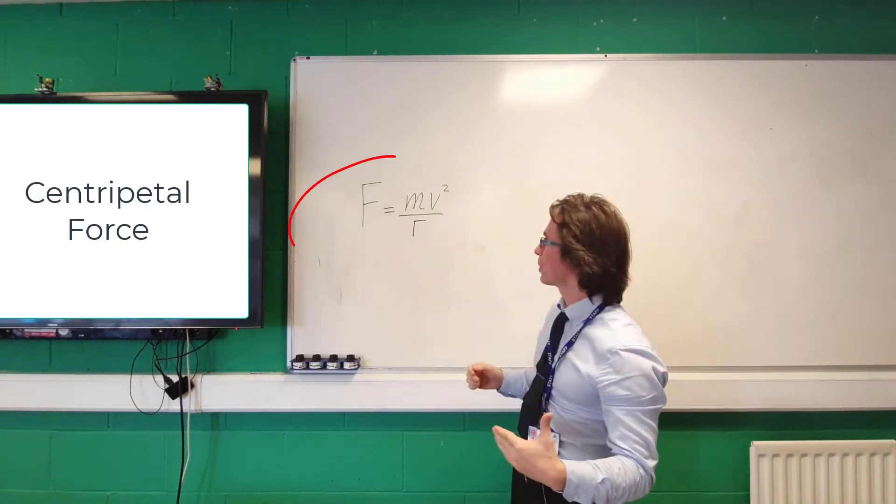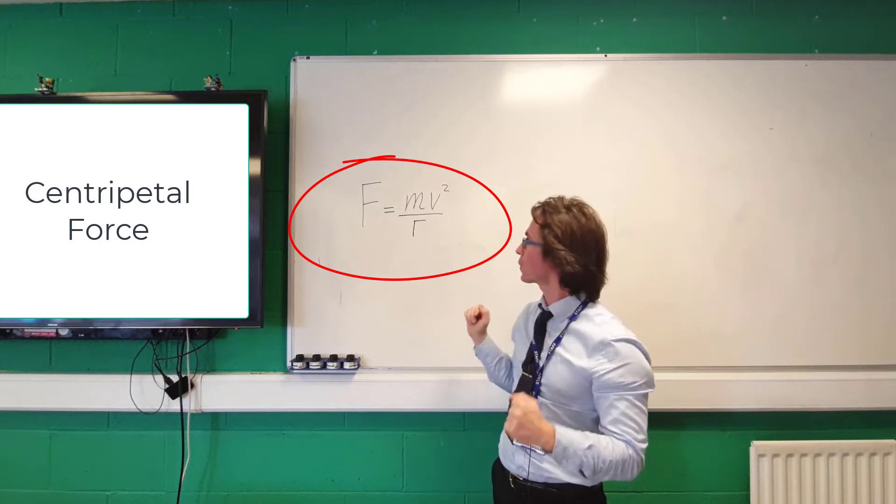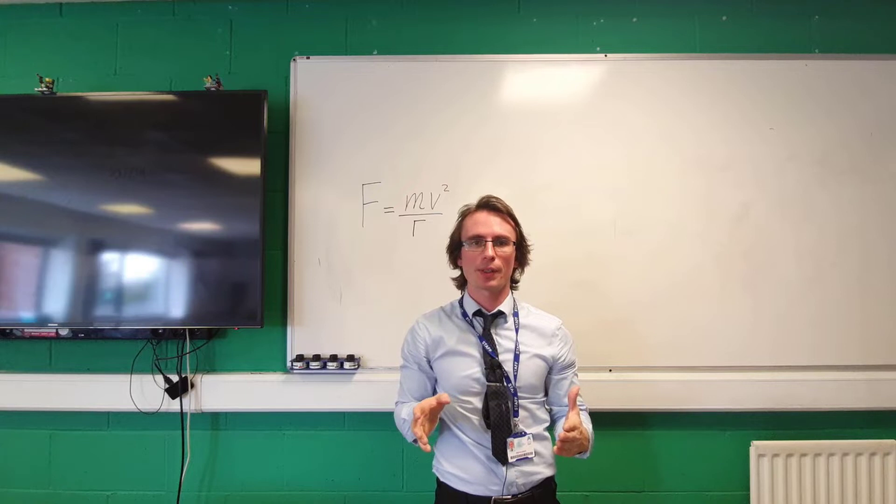The equation for the centripetal force is that the force is equal to the mass times the velocity squared divided by r, where v squared over r is actually your centripetal acceleration.